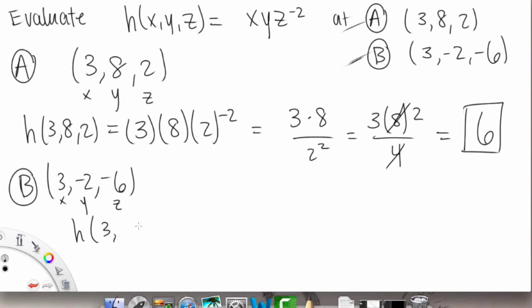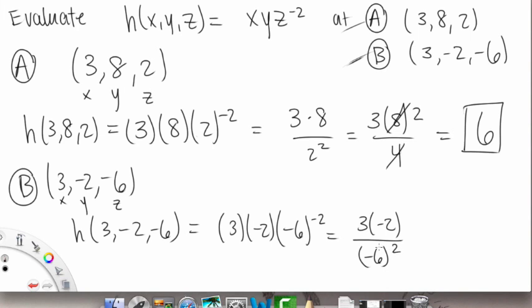If we plug that in, we get h of 3, negative 2, negative 6. This is equal to 3 times negative 2 times negative 6 to the negative 2 power. So this is going to be 3 times negative 2 over negative 6 squared. And this is going to be, on the top we have a negative 6, and on the bottom we have a 36.